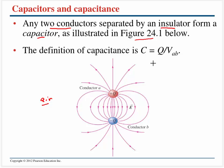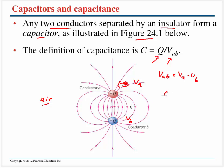The definition of capacitance is going to be the ratio of the magnitude of the charge on each of the two conductors divided by the voltage between them. The voltage at A minus the voltage at B gives us VAB. Looking at units, the unit for charge is the coulomb, and the unit for potential is the volt. This ratio has a special name — it gives us a unit with the symbol F, called the farad. So we talk about capacitors having so many farads associated with them.